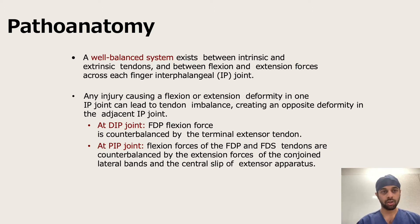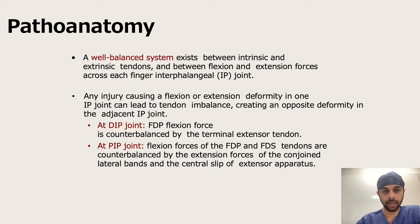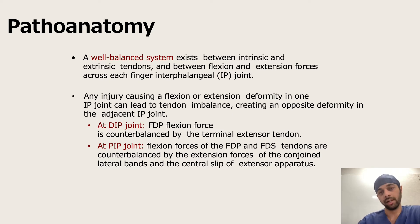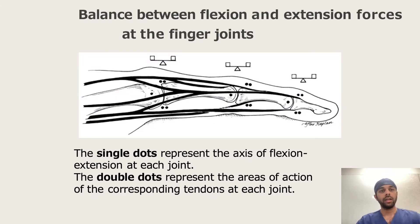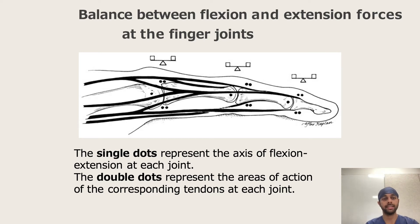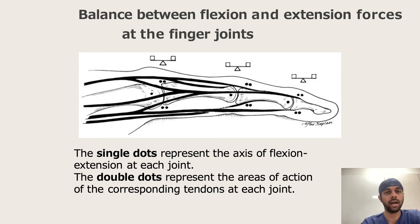If we consider the DIP joint, the flexion force is by the FDP and is counterbalanced by the terminal extensor tendon. At the PIP joint, the flexion forces are by the FDP and FDS, which are counterbalanced by the extension forces of the conjoined lateral bands and the central slip of the extensor apparatus. This figure shows single dots representing the axis of flexion-extension at each joint, while the two dots represent the areas of the corresponding tendons at each joint and how they act.